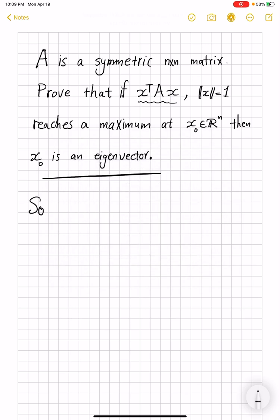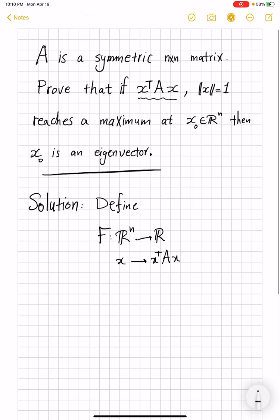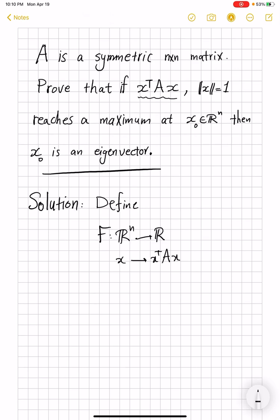So for the solution, I will use the Lagrange multiplier, but I have to first set it up the right way. We define the function F from R^n into R by x mapping to x transpose Ax, and the function G from R^n to R by x going to its norm.